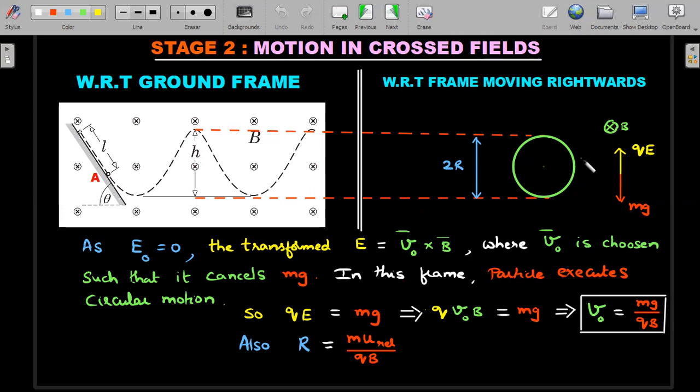In that moving frame, the particle executes circular motion, so qE is mg. Therefore I'll substitute value of E as v naught B. I would be judging the choice of the velocity as v naught is mg by qB. This is the third box that I'll borrow.